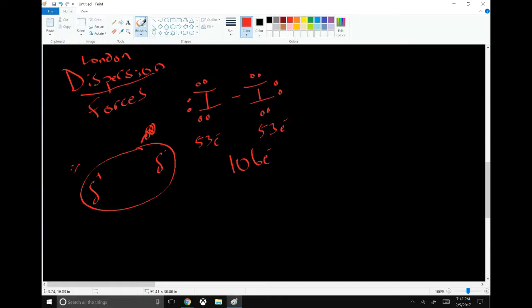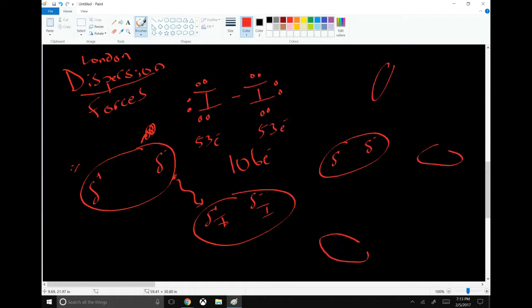Now these random shifts in charge don't last for very long, but while they last, any molecule that's nearby is going to be similarly affected. This random dispersion of electrons can have a cascade effect throughout the entire substance.